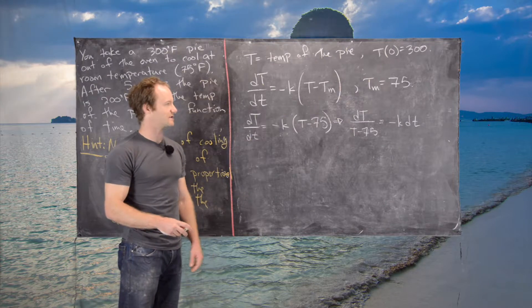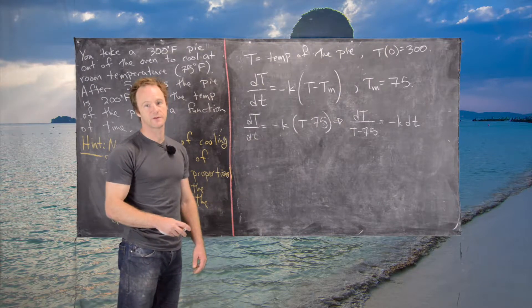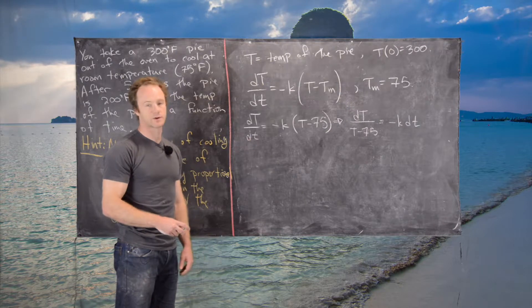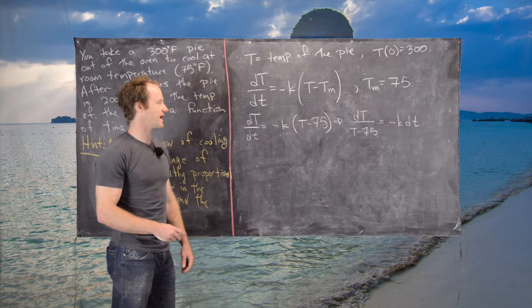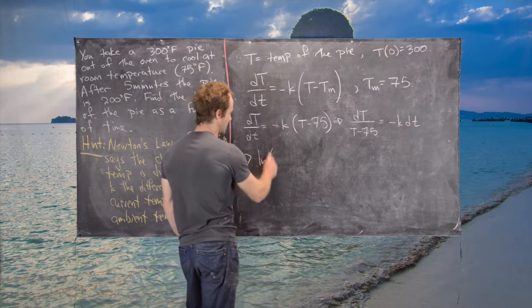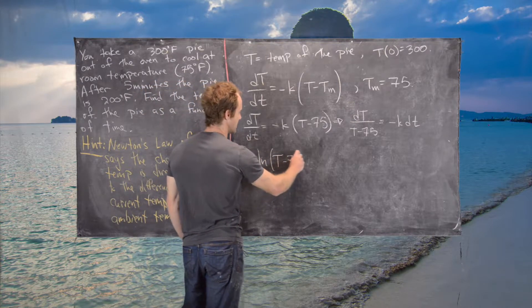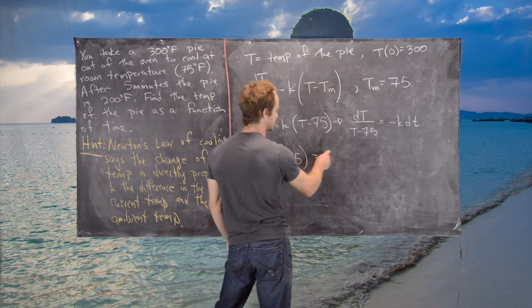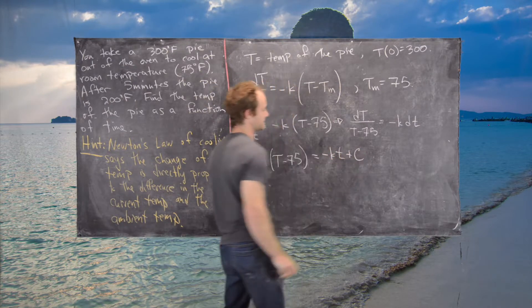Properly speaking, you're taking the anti-derivative of both sides and using consequences of the chain rule on the left-hand side. This gives us ln(T - 75) = -Kt + C.